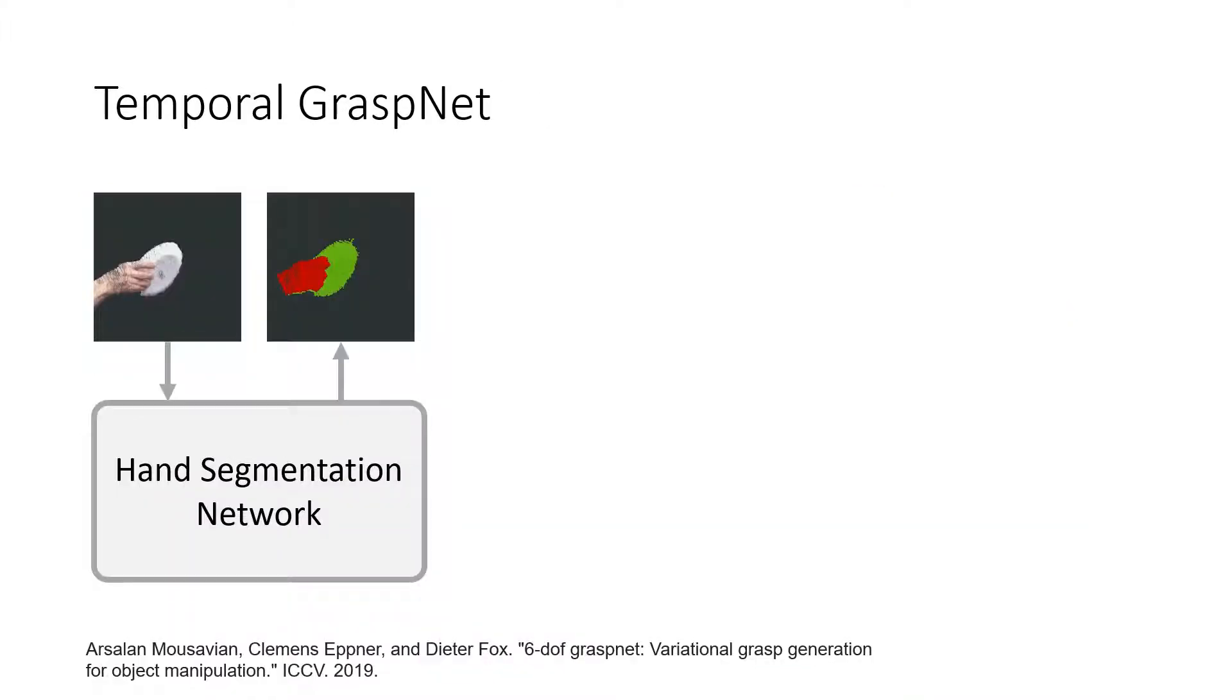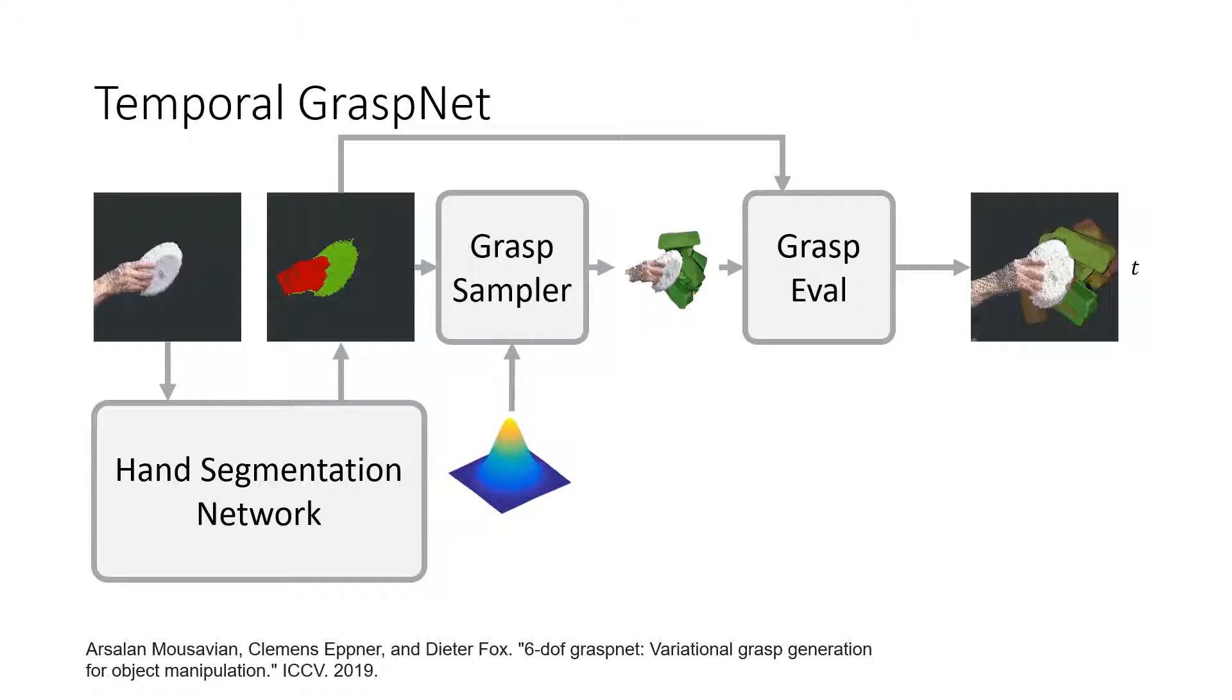Now, we have the point cloud of the hand and the object in hand. We use 6DOF GraspNet to generate a diverse set of grasps. In particular, we use GraspSampler to generate a dense and diverse set of grasps conditioned on the object point cloud from a latent space. Then, the GraspEvaluator will give each grasp a confidence score.